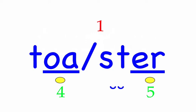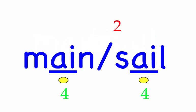Row five. Mainsail. The mainsail on a sailing ship is the major or largest sail on the ship. First syllable: main, three sounds, M-A-N. Second syllable: sail, three sounds, S-A-L. Mainsail — mark the word.